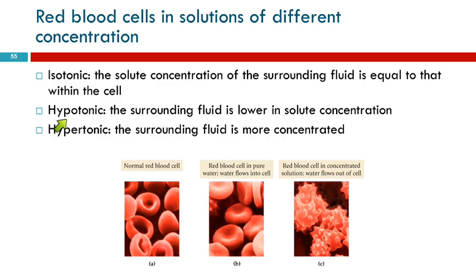Hypotonic means low, so the surrounding fluid is lower in solute concentration. When the concentration in the plasma is lower than inside the cells, water will move into the cells because it goes to the higher concentration. That causes the red blood cells to swell up, and if that continues, they will burst. That's not good — they can't function when they burst.